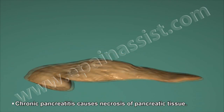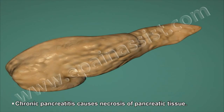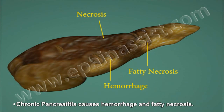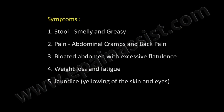Chronic pancreatitis causes necrosis of pancreatic tissue, as well as hemorrhage and fatty necrosis. Symptoms include smelly and greasy stools, abdominal cramps which radiate to the back between the vertebrae, and a bloated abdomen with excessive flatulence.